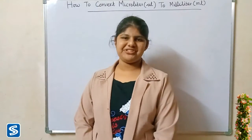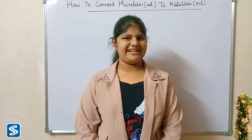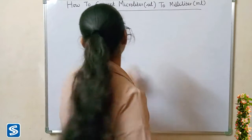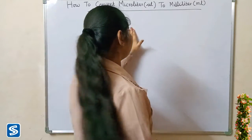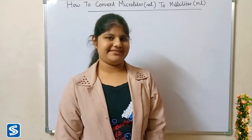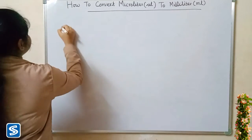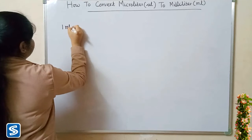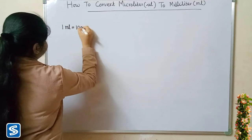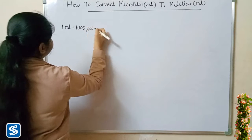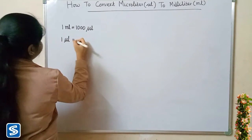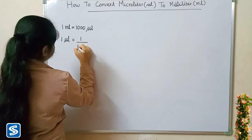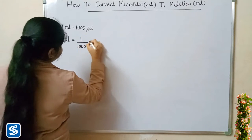Hi friends, welcome to Samish channel. In this video I am going to teach how to convert microlitre into millilitre. Microlitre and millilitre are the units of volume used in the metric system. We know that one millilitre is equal to thousand microlitres, so one microlitre is equal to one by thousand millilitres.